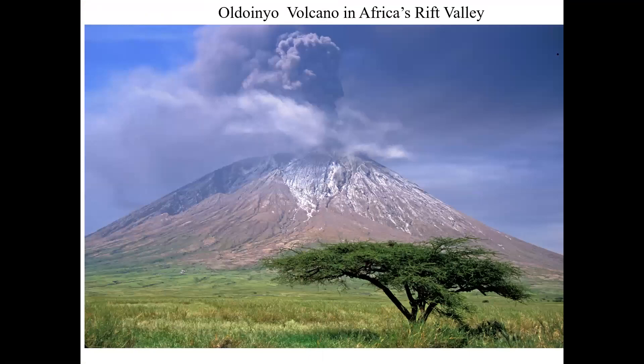This is Ol Doinyo Lengai volcano, also in the Rift Valley. You can see ash blowing from the volcano. This is in safari land where people pay big bucks to see animals roaming the grasslands — and sometimes those animals get suffocated by the amount of ash blowing out of this volcano.